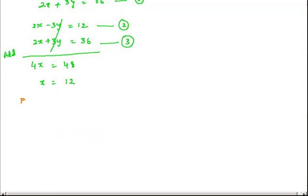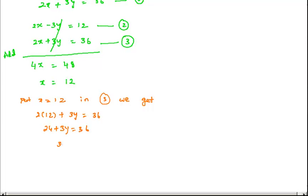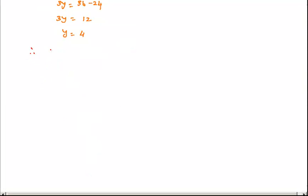Finally we get x = 12. Now put x = 12 in equation 3: 2·12 + 3y = 36, that is 24 + 3y = 36, which implies 3y = 36 − 24 = 12, and finally y = 4. Therefore the solution is x = 12 and y = 4. Now let us discuss case 2.